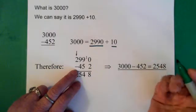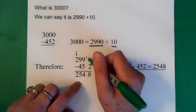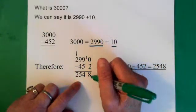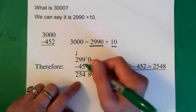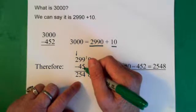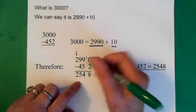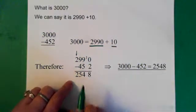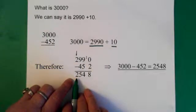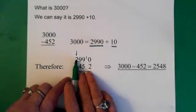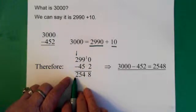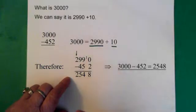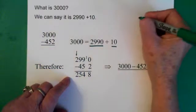Now, at this point, we can subtract. We have 10 minus 2, which is 8. 9 minus 5, which is 4. 9 minus 4, which is 5. 2 minus 0, which is 2. And then, if we're feeling like, oh man, I'm not really sure, this might be wrong, we just do a check.